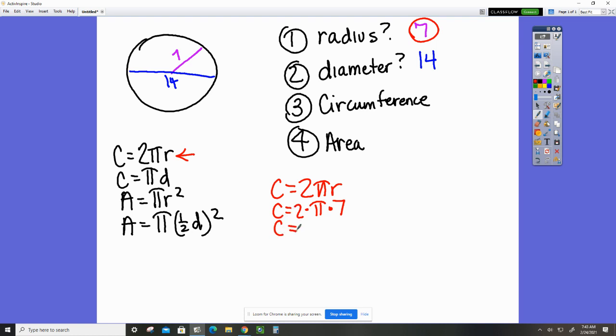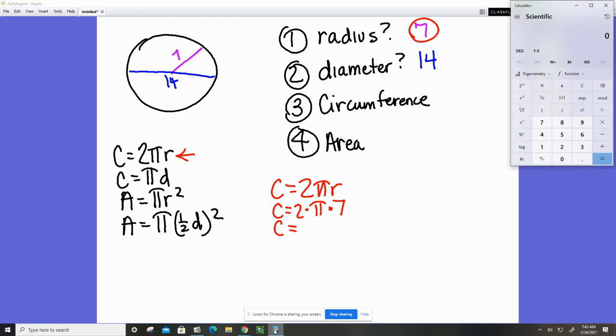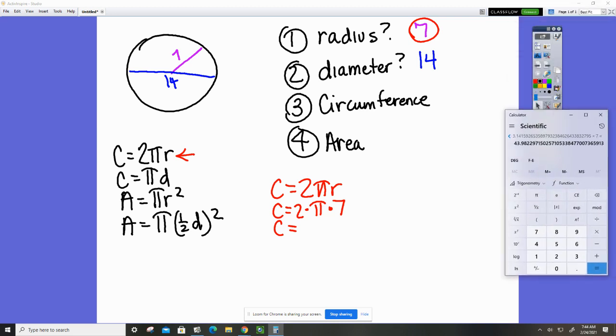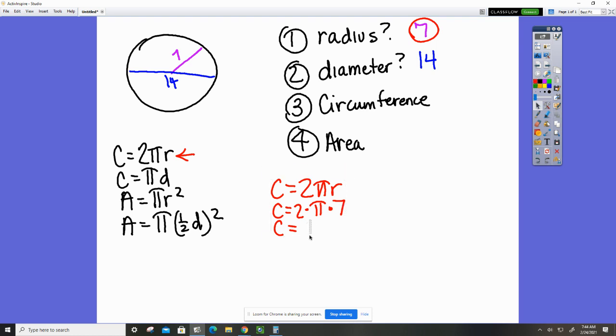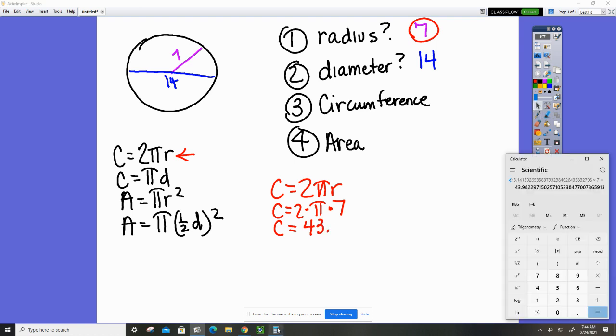So then you'll use your calculator and you will do two times pi times seven equals... I'm assuming that's right but that doesn't seem right, so I'm going to clear and make sure that's right. Two times pi times seven, yeah that sounds better. So the answer to that one is 43.98. I'm looking at right here, so 43.98.